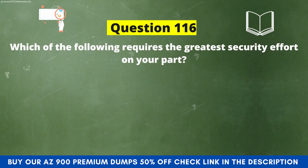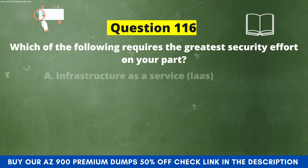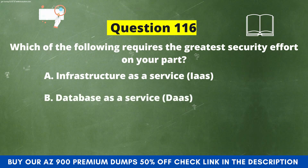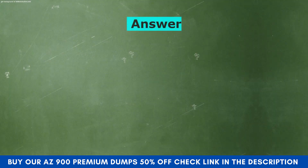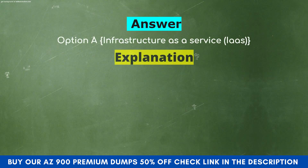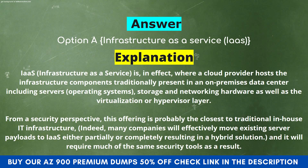Next question. Which of the following requires the greatest security effort on your part? Option A: Infrastructure as a Service. Option B: Database as a Service. Option C: Software as a Service. Option D: Platform as a Service. The correct answer is Option A, Infrastructure as a Service. IaaS is where a cloud provider hosts the infrastructure components — including servers, storage, and networking hardware, as well as the virtualization or hypervisor layer. From a security perspective, this offering is the closest to traditional in-house IT infrastructure, and will require much of the same security tools as a result.